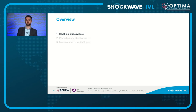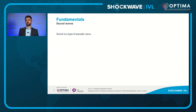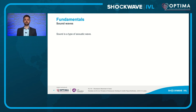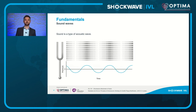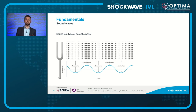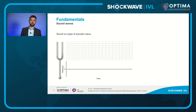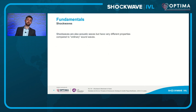Understanding these different things really helps explain why intravascular lithotripsy is such an exciting technology, and we can begin to appreciate what adaptations have been made for the intravascular environment to maximize efficacy and minimize complications. It's helpful to start with a reference we're more familiar with: the soundwave. A soundwave is an example of an acoustic wave — a type of energy propagation through a medium by means of compression and decompression. A tuning fork creates oscillating periods of high and low pressure as adjacent particles are first pushed together and then spread apart.